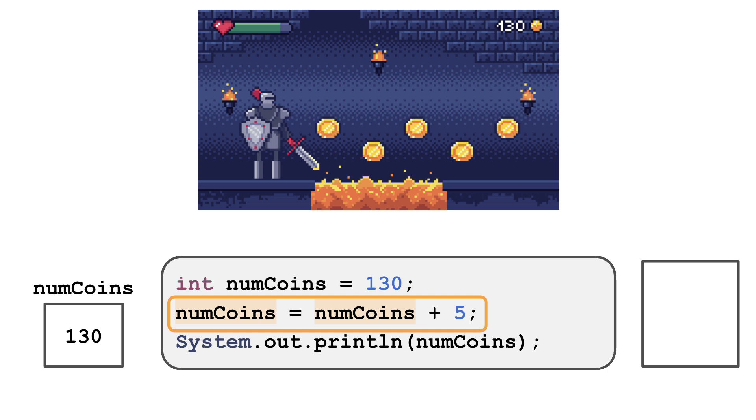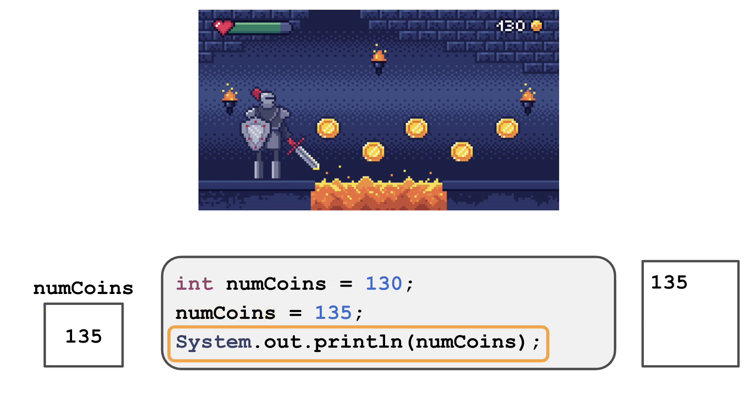To see what's going on here, let's focus on the right hand side of the assignment operator. NumCoins has a current value of 130. So this expression is really just saying 130 plus 5. This evaluates to 135. So NumCoins is assigned the updated value of 135. So now when the program prints the value of NumCoins, you get 135.